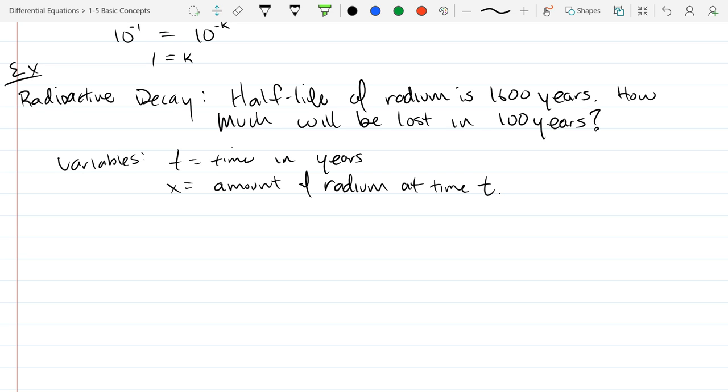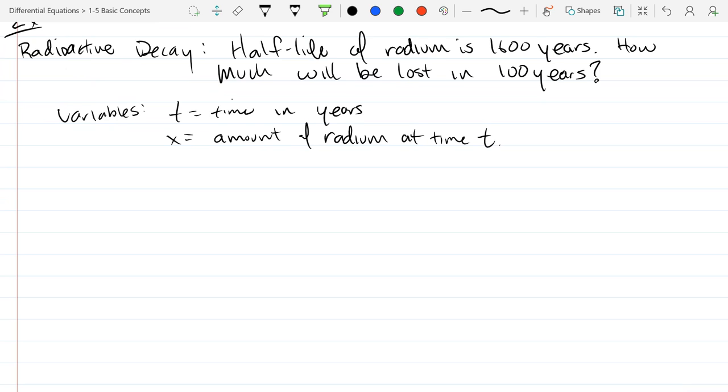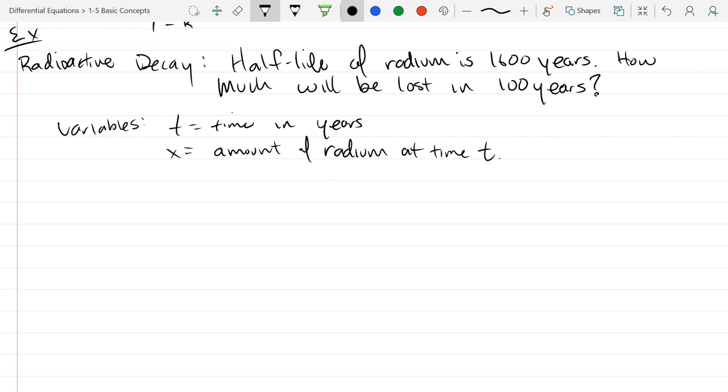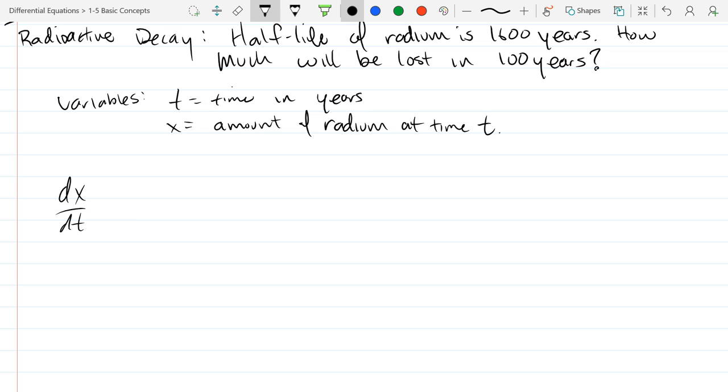So it's going to decay. In this decay, the decay is related to how much is present. So we are going to have dx/dt equals kx. Or we'll go with negative kx because we'll be decaying or shrinking. So however much is present, the amount of decay is going to be related to that much. Or the rate of decay.